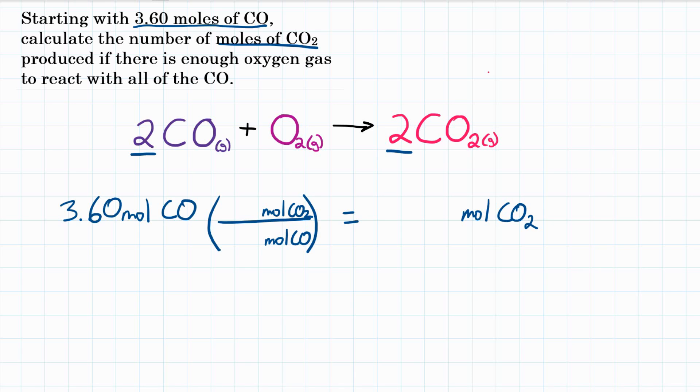So those numbers, those coefficients, that is our ratio. So for carbon monoxide, we're going to put a 2 in our conversion factor. And for carbon dioxide, we're also going to put a 2. We got those from the chemical equation.